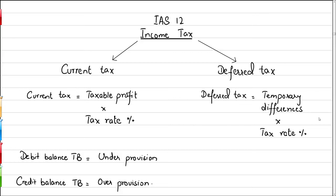This video is basically about the revision of IAS-12 Income Taxes, which is another major accounting standard from the perspective of financial and corporate reporting. Income taxes are basically divided into two types: current tax, which is the tax that we pay for the current year, and deferred tax, which is nothing but an accounting adjustment.